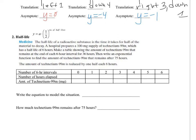So the half-life is your initial amount that you have, one half. Now it's one half because that's the growth factor and the number of half-lives. A half-life of a radioactive substance is the time it takes for half of the material to decay. A hospital prepares 100 mg supplies of technetium-99M, which has a half-life of 6 hours. So write an exponential function to model to find the amount left after 75 hours.